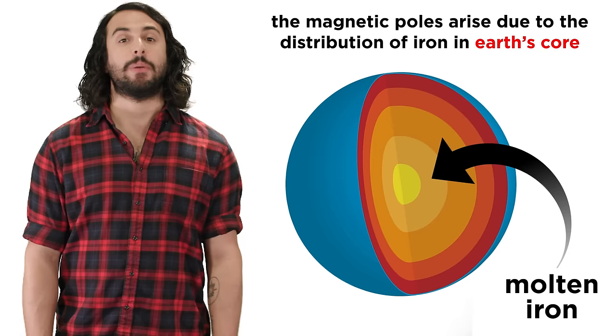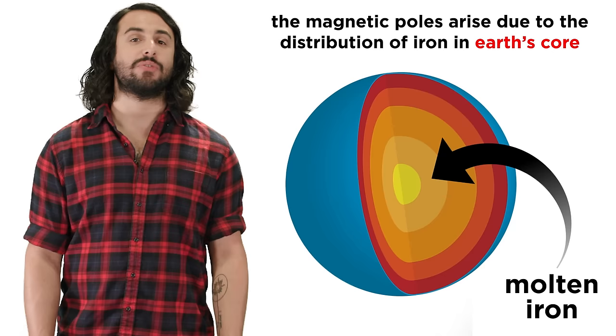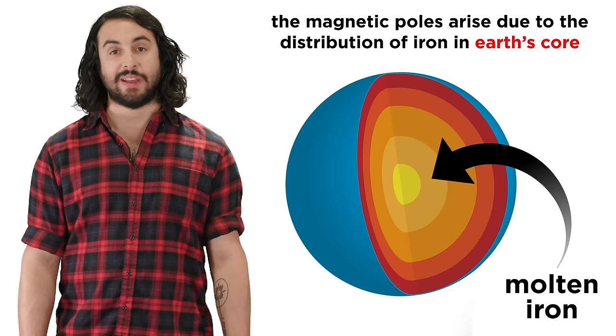The geographic poles mark Earth's axis of rotation, but the magnetic poles exist because of the way atoms are distributed in Earth's iron core, which align their spins just like the atoms in a bar magnet.